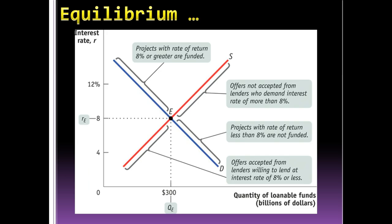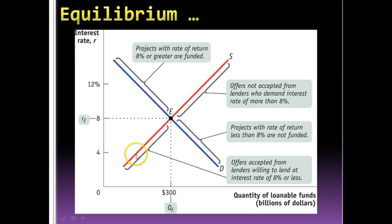When we put the two together, we get the equilibrium interest rate. If the interest rate is above equilibrium, there's a greater supply of loanable funds than is demanded, so the interest rate would need to fall to encourage people to take advantage of available funds. If the interest rate were below equilibrium, say at 4%, there's a shortage — not enough loanable funds supplied to meet demand — and people would bid the price up to access the limited funds available.